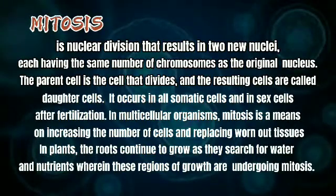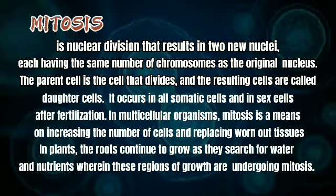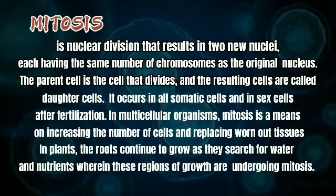Mitosis is a nuclear division that results in two new nuclei, each having the same number of chromosomes as the original nucleus. The parent cell is the cell that divides and the resulting cells are called daughter cells. It occurs in all somatic cells and in cells after fertilization. In multicellular organisms, mitosis is a means of increasing the number of cells and replacing worn-out tissues.